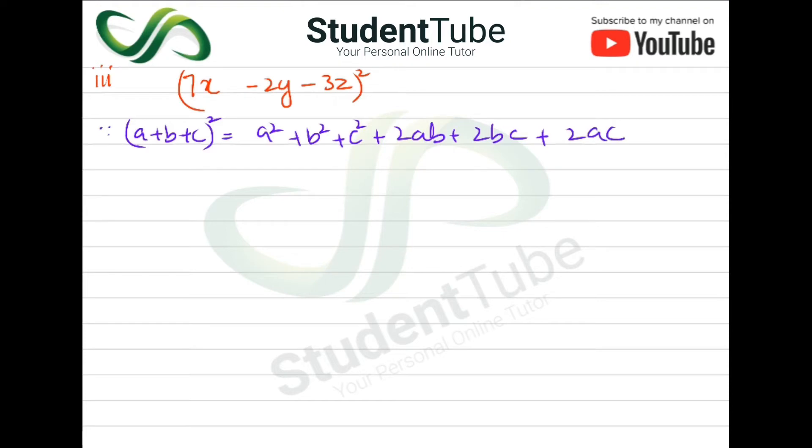Now here, a is 7x, b is minus 2y, and c is minus 3z. Now let's solve this.